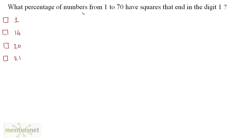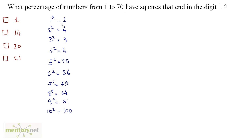What percentage of numbers from 1 to 70 have squares that end in the digit 1? Let us list the numbers from 1 to 10 and their squares. From 1 to 10, how many numbers have squares ending with digit 1? We have 1 squared equals 1, which ends with digit 1, and 9 squared equals 81, which also ends with 1. So from 1 to 10 there are 2 such numbers.